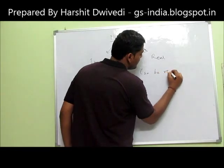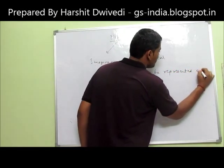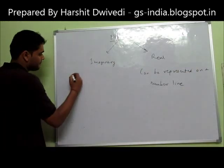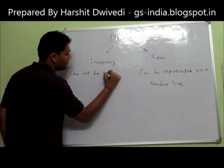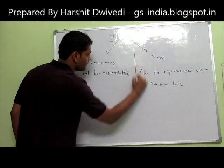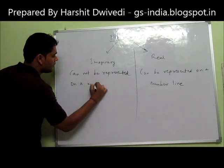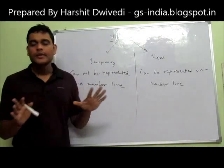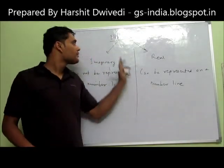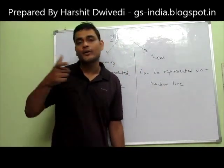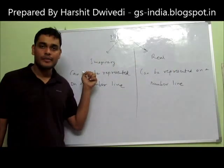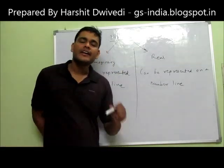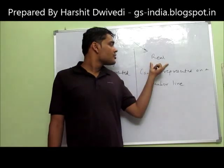Numbers can be represented on a number line. So what is this number line? First of all, numbers are of two types: imaginary numbers and real numbers. Obviously there is also a complex number, but complex numbers are nothing but the sum or mixture of real numbers and imaginary numbers — I will take that up further. This is the basic definition of these two types. When it comes to CAT, 99% of the questions are covered from real numbers.